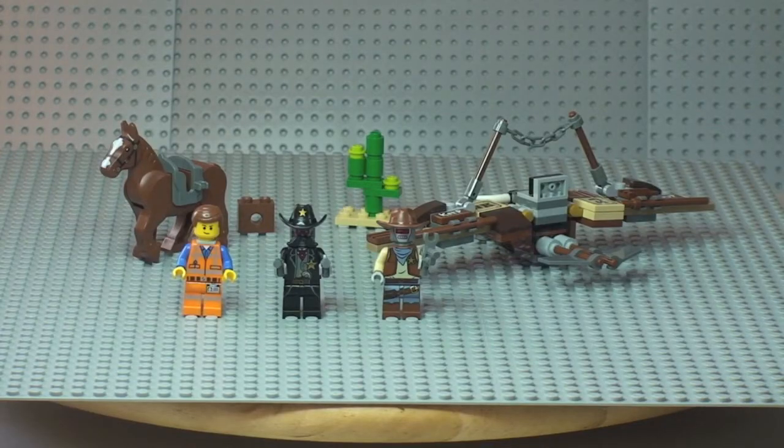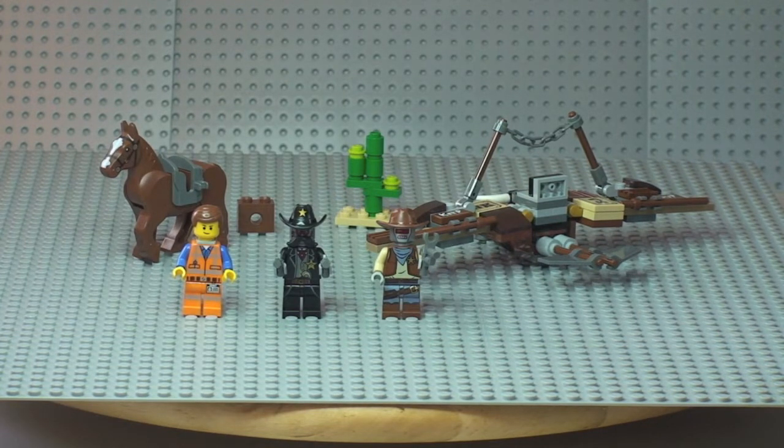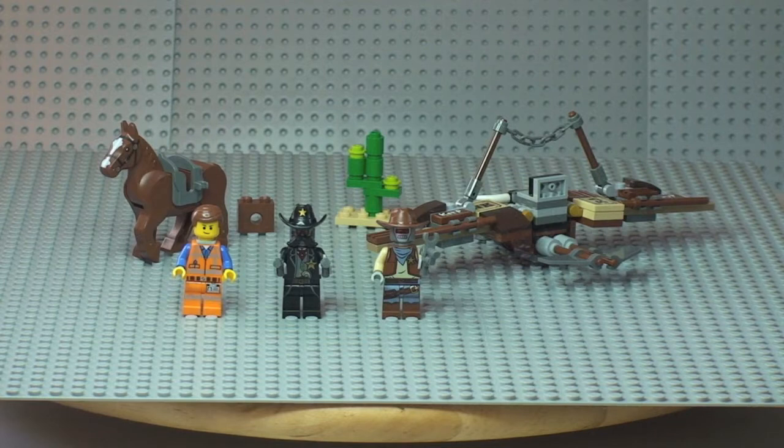There's our first look at the set. This actually comes with the getaway glider at the rear there, you'll see this cactus tree, we have the horse towards the left, and then the three minifigures that come with this set.